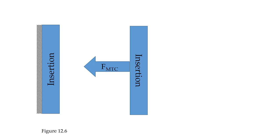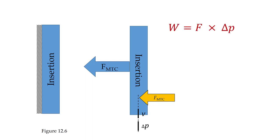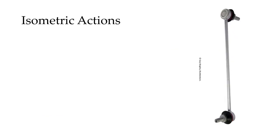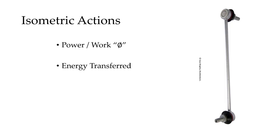In the third case, the MTC produces force, but it is met by an equal and opposite resistance, and neither end moves. In this case, the displacement is zero, and if the displacement is zero, then the velocity is also zero. Because the displacement is zero, the work done by the MTC is also zero — because zero times anything is zero. And if the work is zero, then the power is also zero. These are isometric actions. With isometric actions, the work or power is zero, and the MTC is neither generating nor absorbing energy. It is acting like a strut.